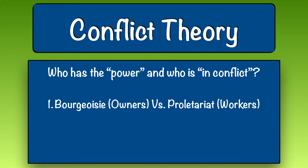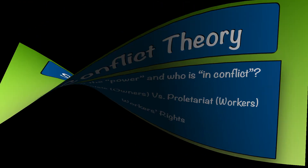Conflict theory is always looking at who has the power in any particular interaction and who might be in conflict. Conflict theorists look at work and the economy as largely a macro-level conflict between the bourgeoisie — the owners of the means of production, or management — versus the proletariat, the workers and day laborers who keep companies and factories working. From the conflict perspective, this ongoing conflict is how we came to have workers' rights that we enjoy today, such as the 40-hour work week, overtime pay, sick time, vacation, health insurance, retirement funds, and social security.